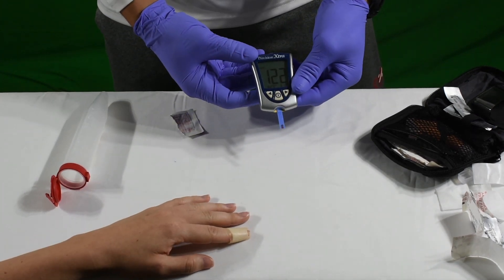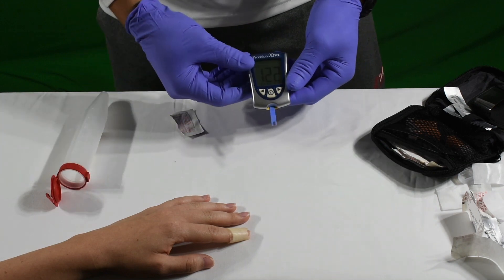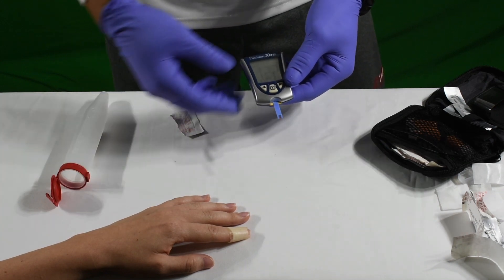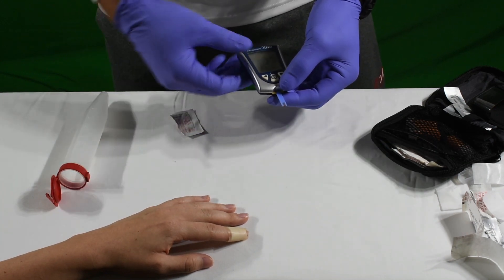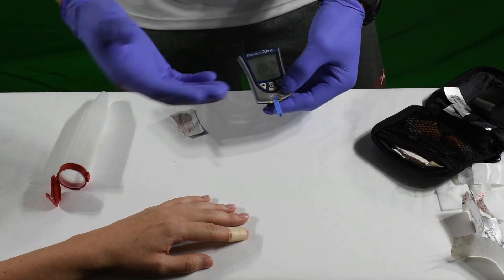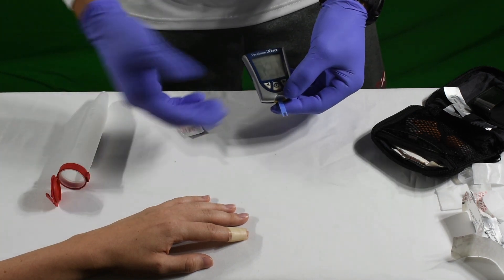Reading is 122. Usually the normal range is 80 to 120, but in the field it's based off your patient presentation, whether they have diabetes or not. So whatever their norm is. But the norm is usually 80 to 120.